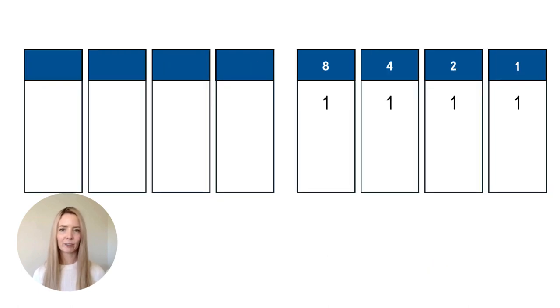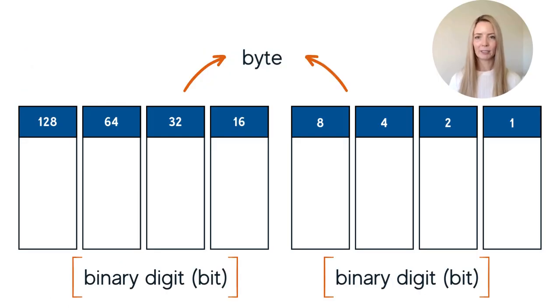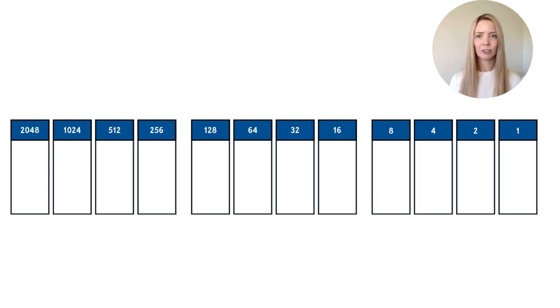Remember that the base two system doubles across each column. What do you think the next column will be? Yes, 16. Then we continue to double. So we have 32, 64 and 128. Eight bits grouped into two lots of four, which is what we have here is called a byte. Traditionally, binary is grouped into fours. So you can continue to add sequences of four bits.